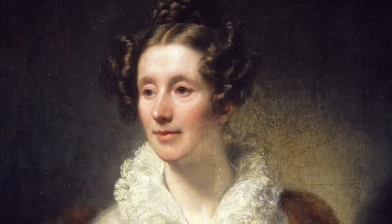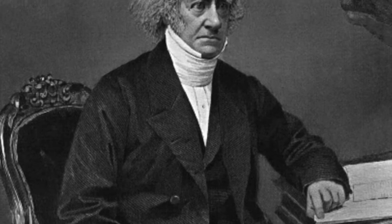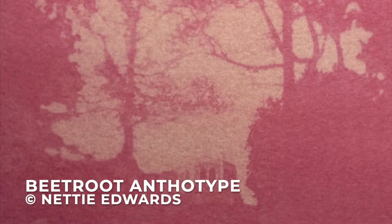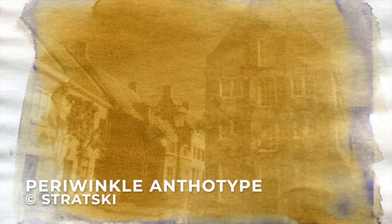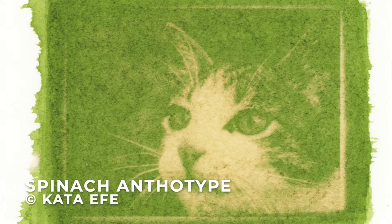Anthotypes were discovered by Mary Somerville in 1842, who then presented her findings to Sir John Herschel, the inventor of the cyanotype. Anthotypes make the most of the light-sensitive material in plants, so a photographic emulsion is made from crushed plant material mixed with either water or pure alcohol.